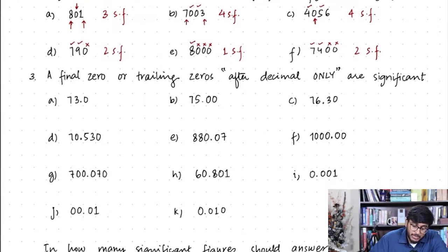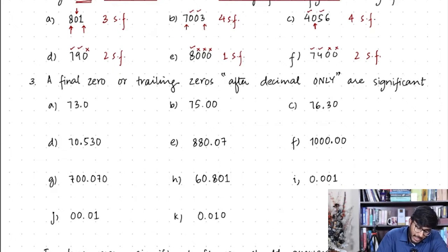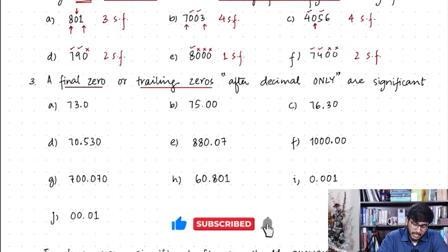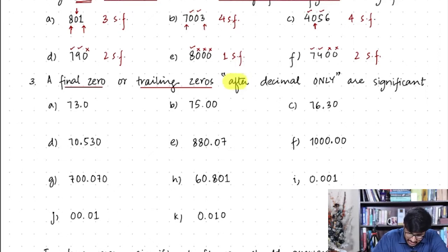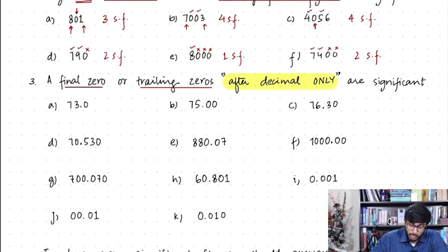The third rule helps us find out whether a zero written after a decimal place in a decimal number is going to be significant or not. A final zero — that is, trailing zeros written at the end of a number, like in 790 or 8000 — after the decimal place are significant. If a zero is a trailing zero after a decimal place it's significant; otherwise not. Let's practice this rule on a few numbers.